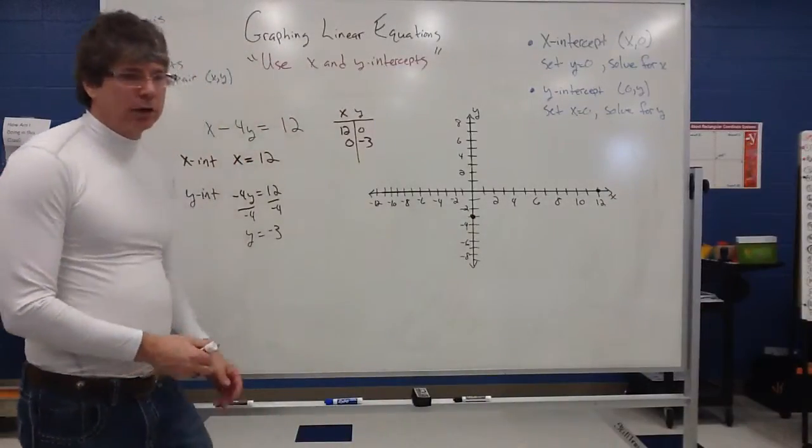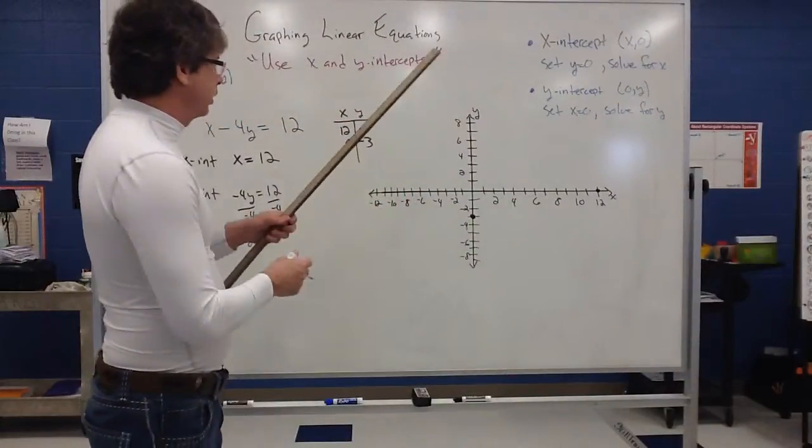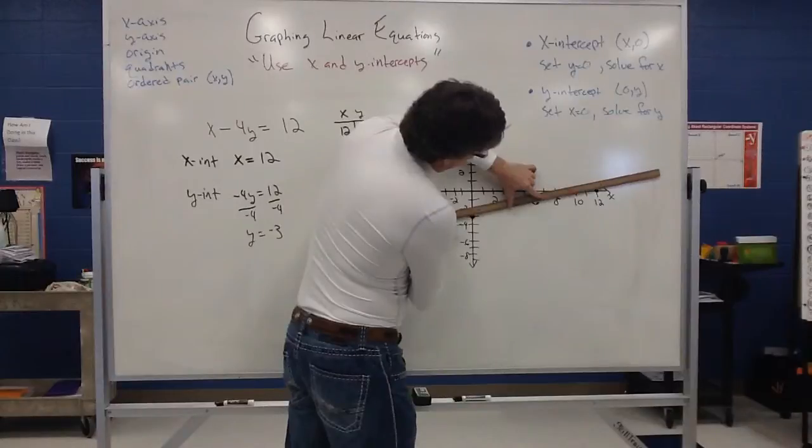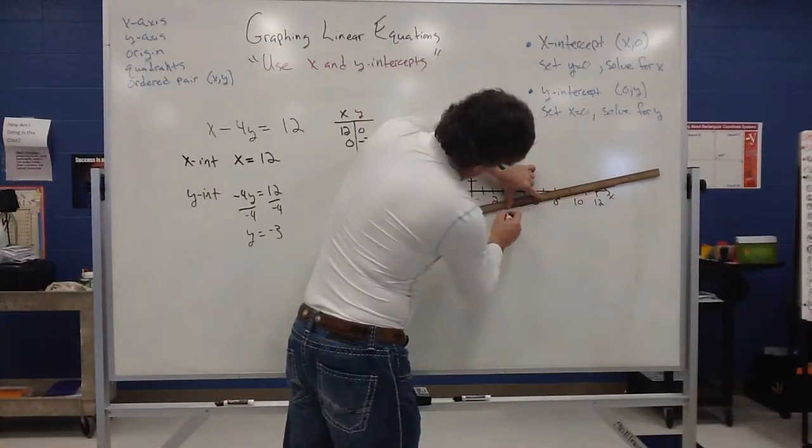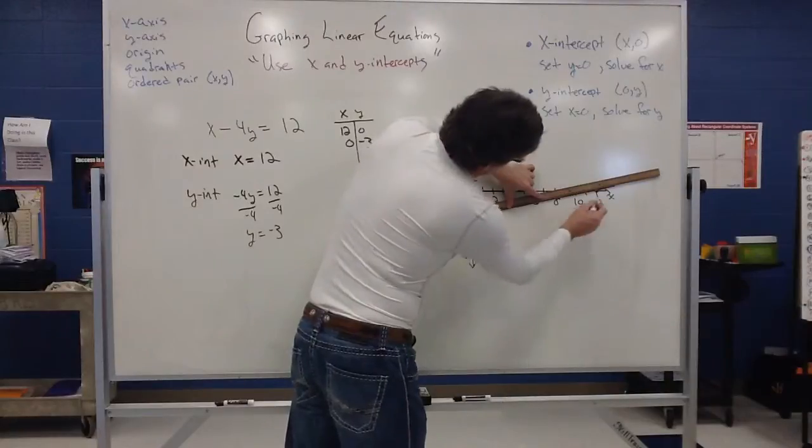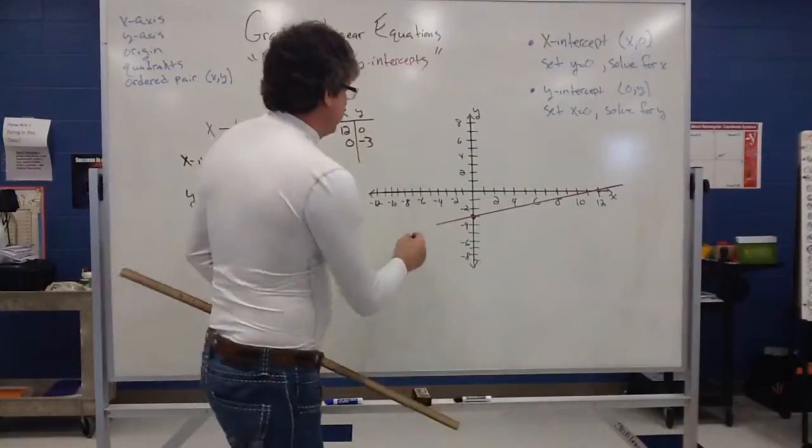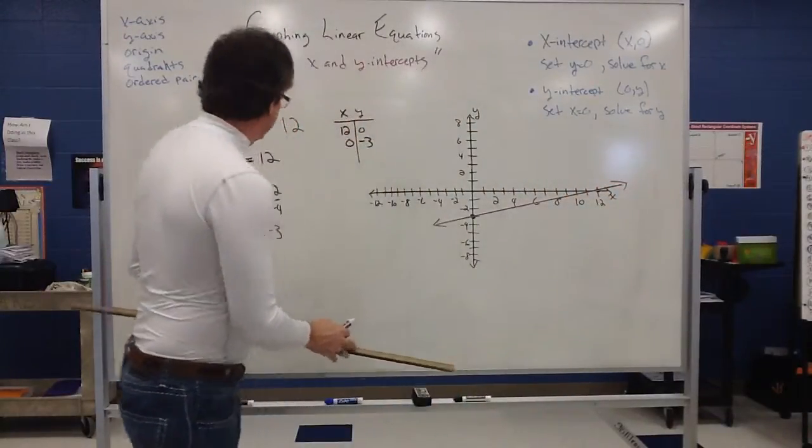And again, to graph, we still got to draw a line through those two points. And that will create the graph of our equation. So if I can line those up, that goes a long way up there. Let's see if I can get that to work. Okay. So that would be the graph of this equation.